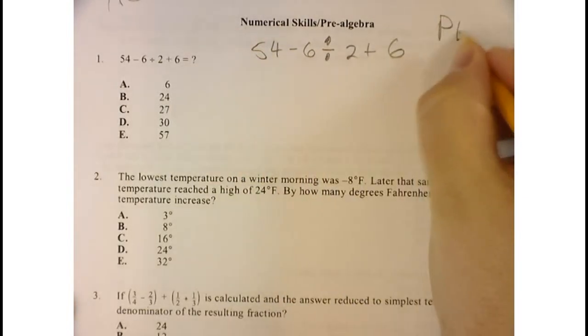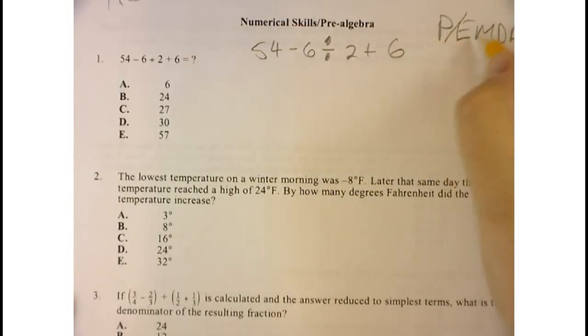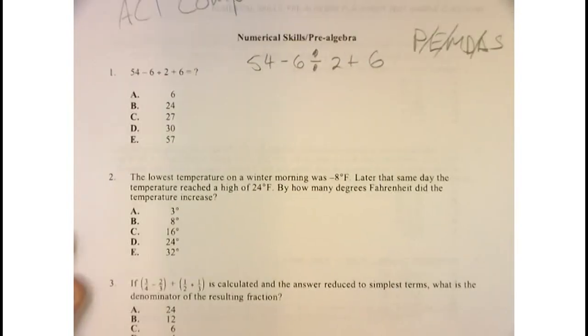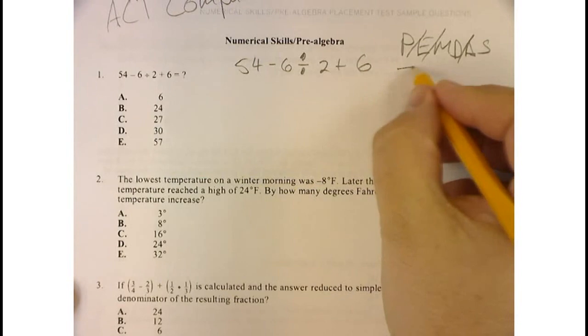In order to do this problem, we have to remember, please excuse my dear Aunt Sally, and that stands for parentheses, exponents, multiplication, and division, and then adding and subtracting. So this is the order in which we do things.